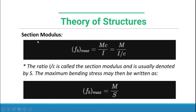For section modulus: F sub B maximum equals MC over I, which can also be written as M over (I/C). The ratio I over C is called the section modulus, usually denoted by S. The maximum bending stress may then be written as F sub B maximum equals M over S.